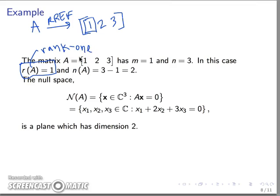We would call this a rank one matrix, a matrix whose rank is equal to one. The dimension of the column space is one and the dimension of the null space is two.